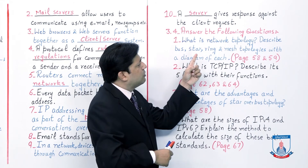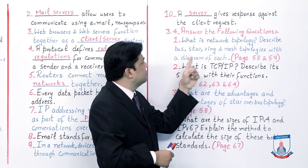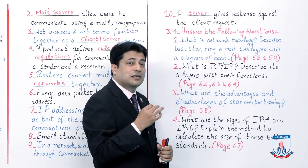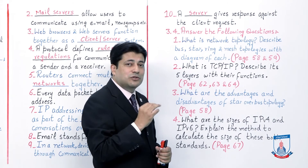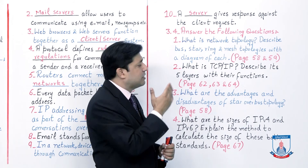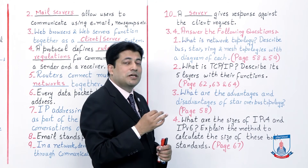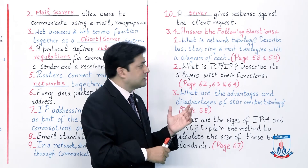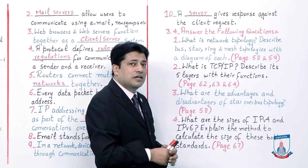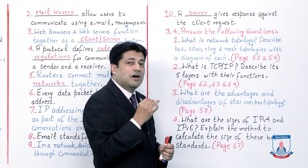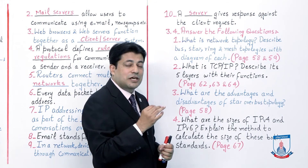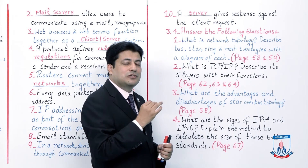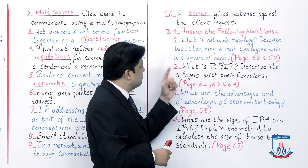Question 1: What is network topology? Describe bus, star, ring, and mesh topologies with a diagram of each. From the network topology lecture we saw that topology is the physical layout of a network, and we covered bus, star, ring, and mesh topologies with figures in detail. Book pages 58 and 59 have the answers.